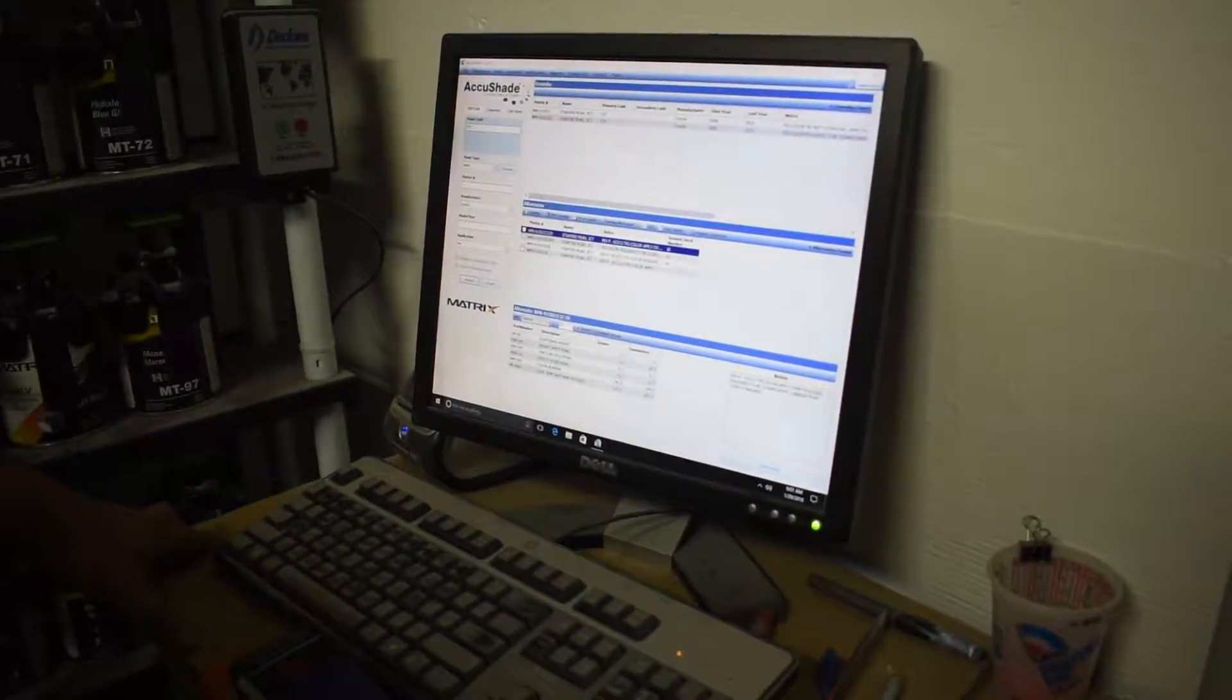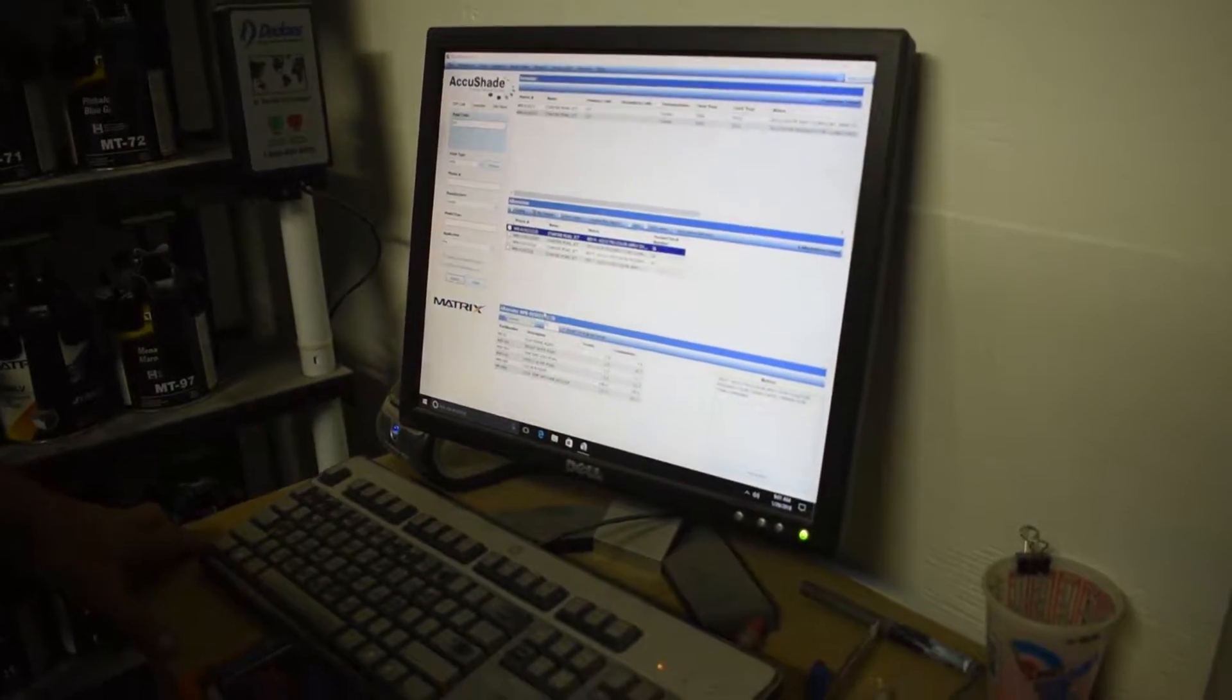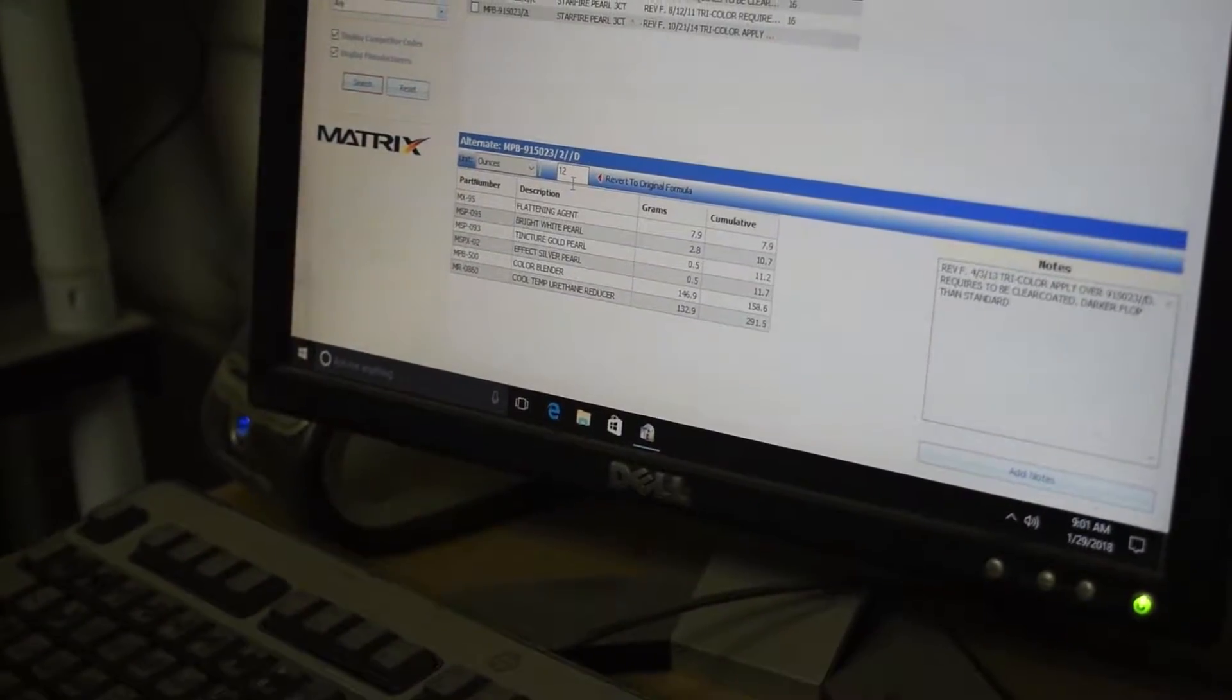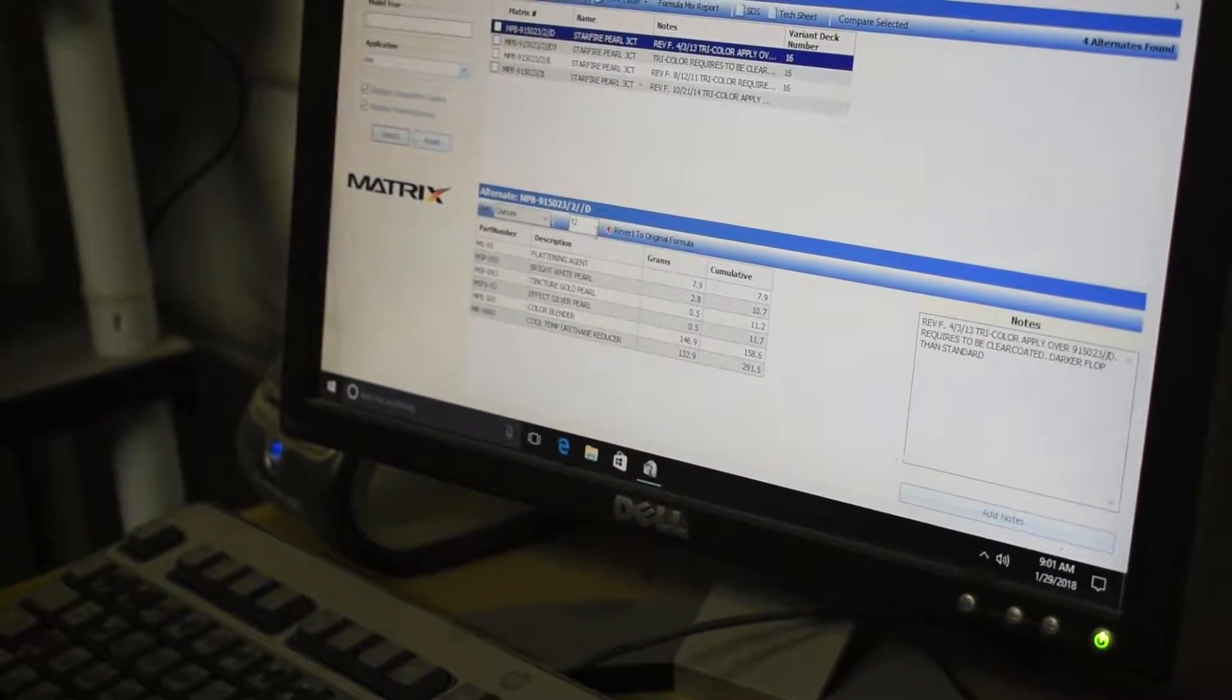Now down here, we put in how much paint we want or need for the job. And in this case, it's going to be 12 ounces, sprayable, which means ready to spray, already reduced, ready to put in the gun.